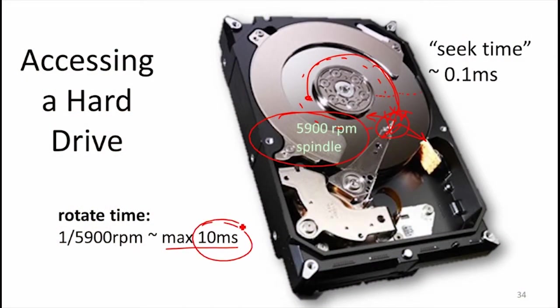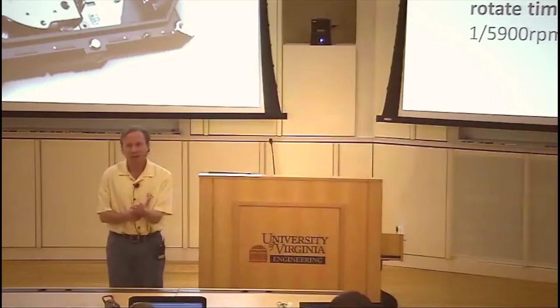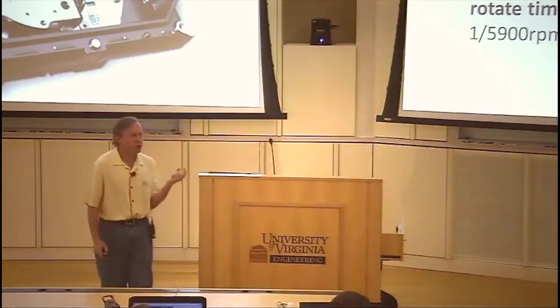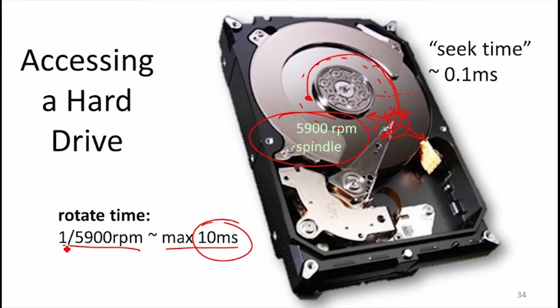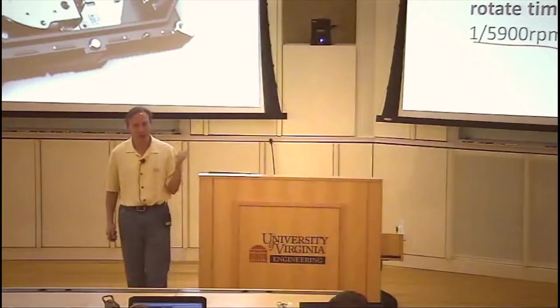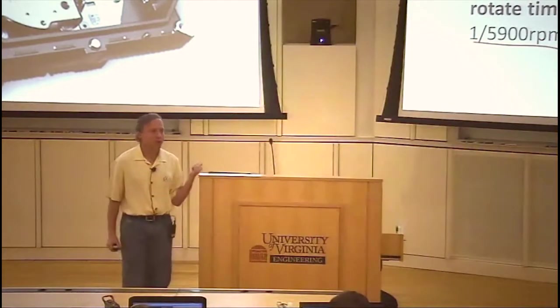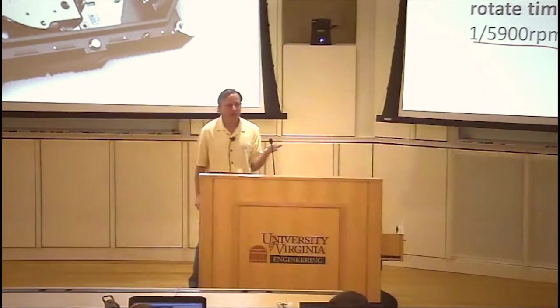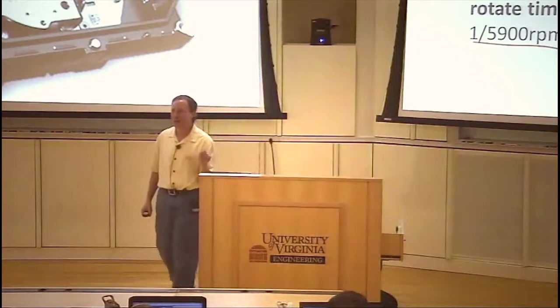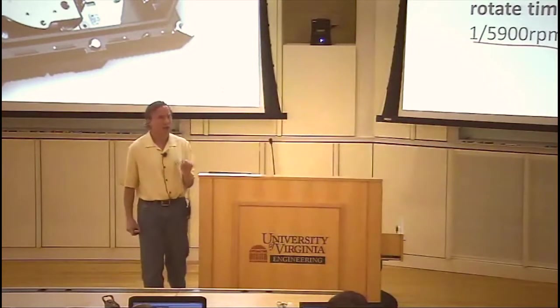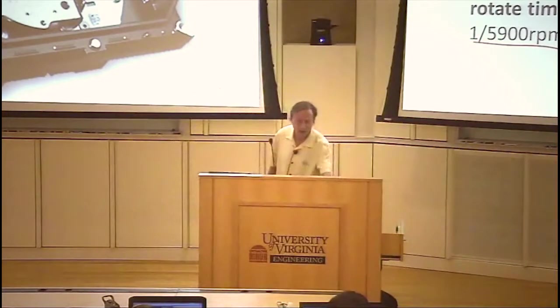The two times that matter: rotation can take up to 10 milliseconds, compared to DRAM latency of around 10 nanoseconds — that's a million times slower. On average, you only have to wait half a rotation. If you're smart — which gets back to the same issue Turing was dealing with programming delay lines — you figure out how to place things on disk so you read data that's near the head. This is what database designers spend a lot of time on: storing data to minimize seeks and rotation wait times.